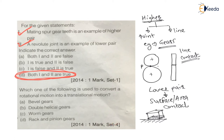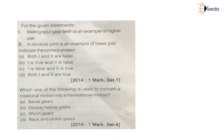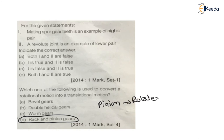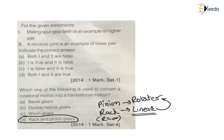The question is: which one of the following is used to convert rotational motion into translational motion? We know that a rack and pinion gear is used to convert linear motion into rotational motion, or rotational motion into linear motion. Therefore option D — rack and pinion — is the correct choice. The pinion is the smaller one which rotates, and the rack has infinite radius, meaning infinite radius corresponds to linear motion.